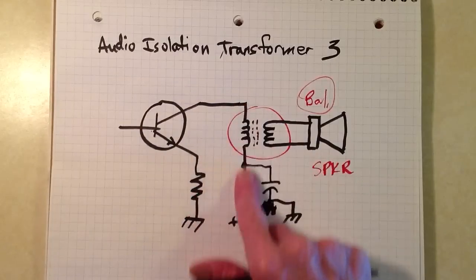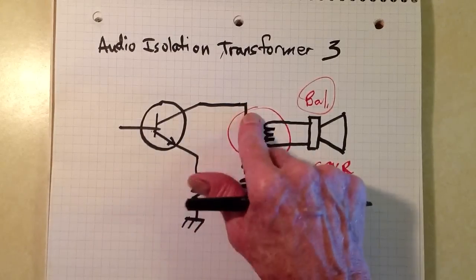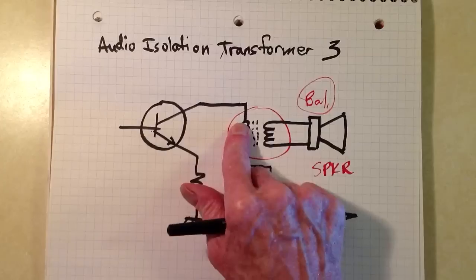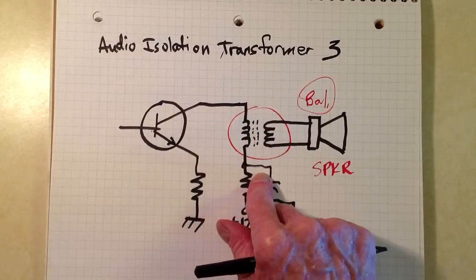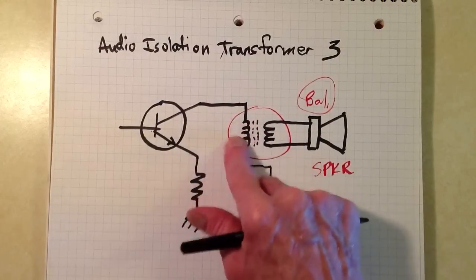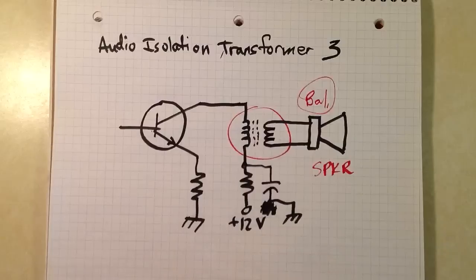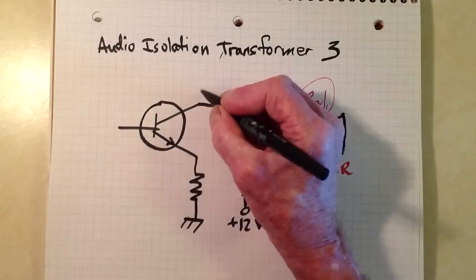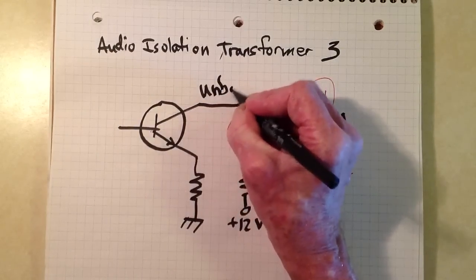This side carries signal, this side is grounded. So we have basically an unbalanced system, meaning that coaxial cable, for example, could be used.